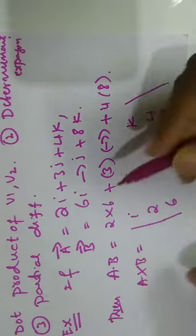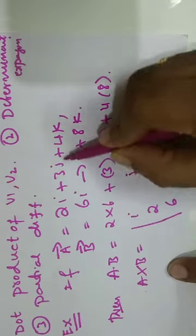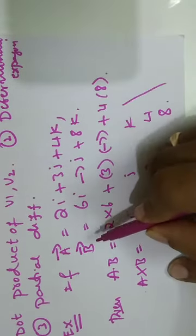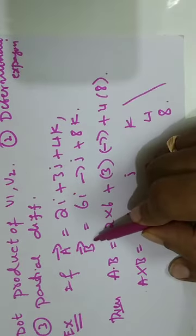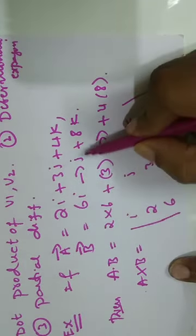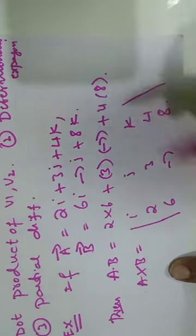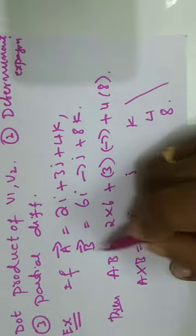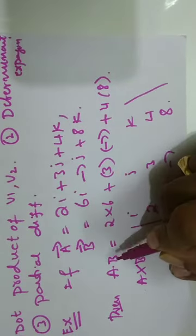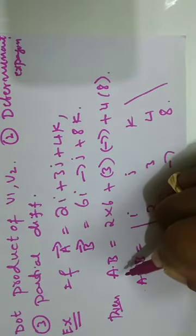Suppose there is a vector a = 2i + 3j + 4k, and a vector b = 6i - 7j + 8k. Then what is the dot product between a and b?